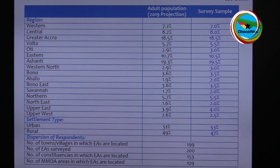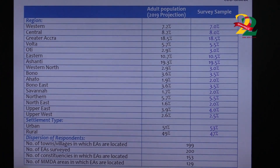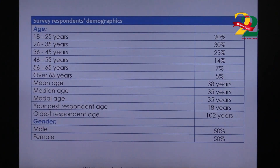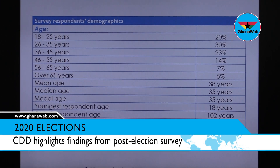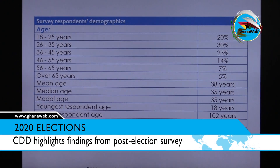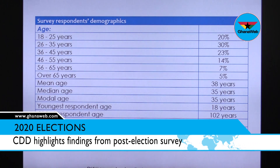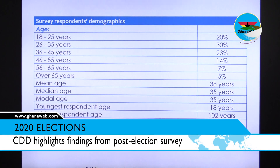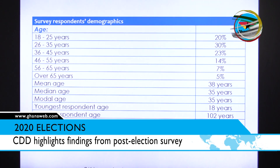On age: our sample covers the social demographics of our society. Over 50% falls within what we call the youth of the country — 18 to 35 years. The oldest person was 102 years old, and the youngest was of course 18 years.